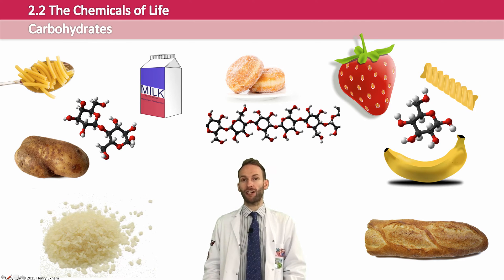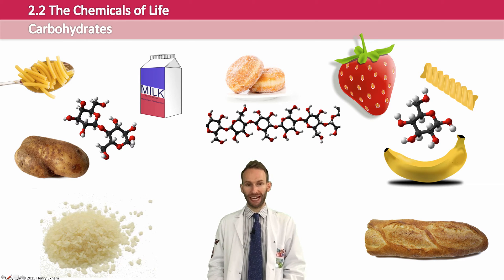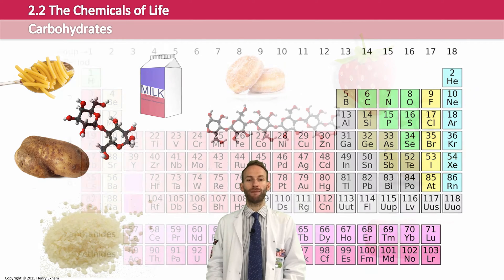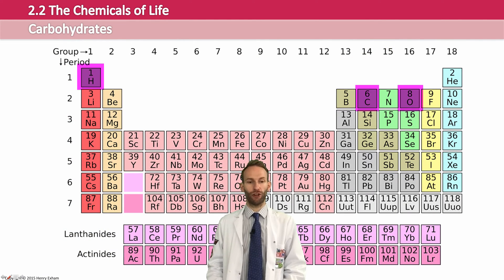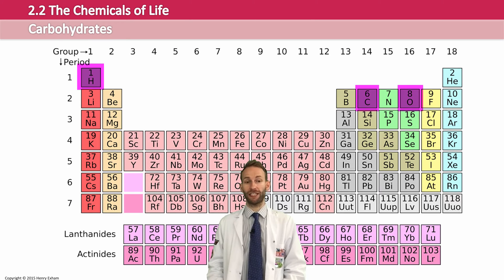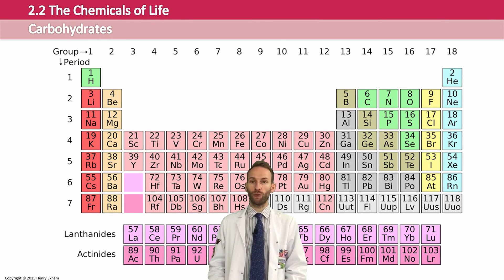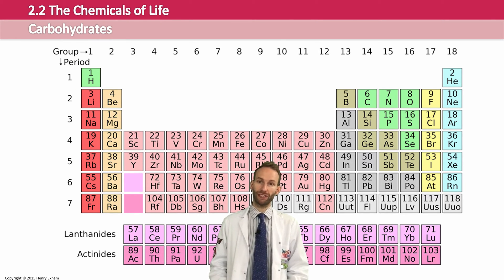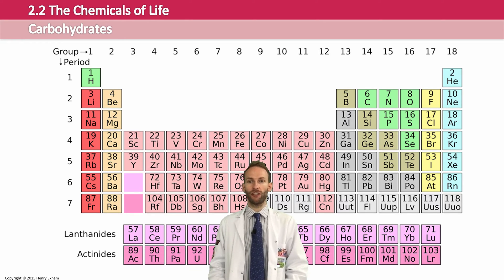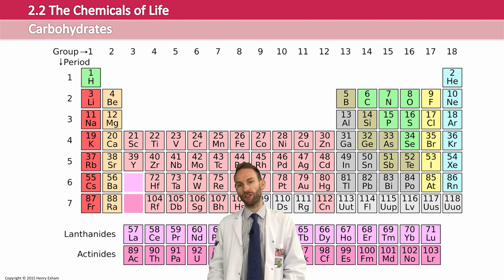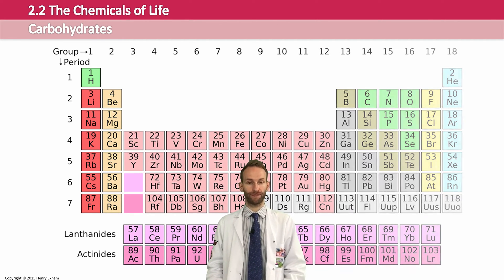Carbohydrates are molecules that are made up of just three elements — just like lipids were, they are made up of carbons, hydrogens, and oxygen. We can organise carbohydrates into different groups based on their size: whether they're small single sugars, double sugars, or long chain sugars.